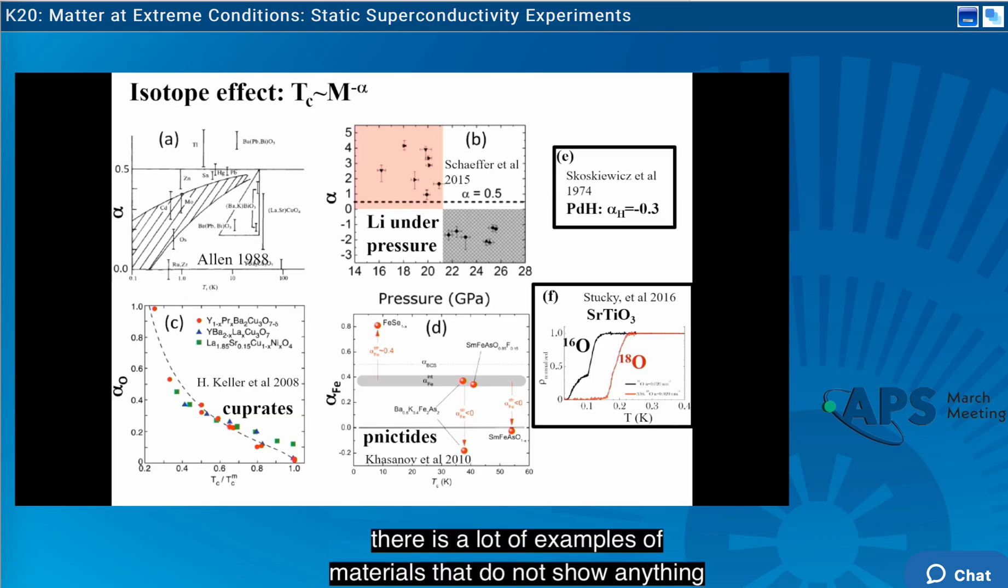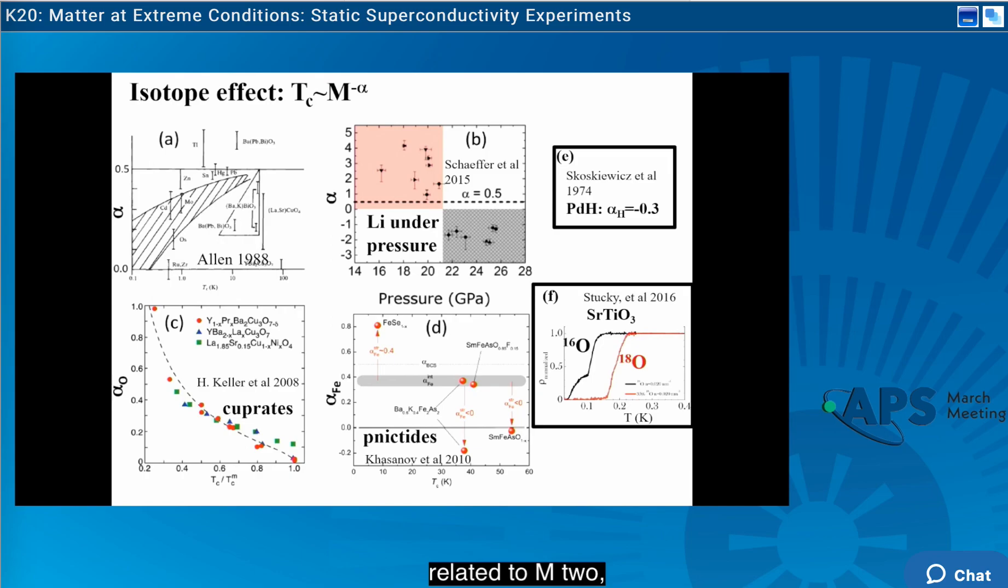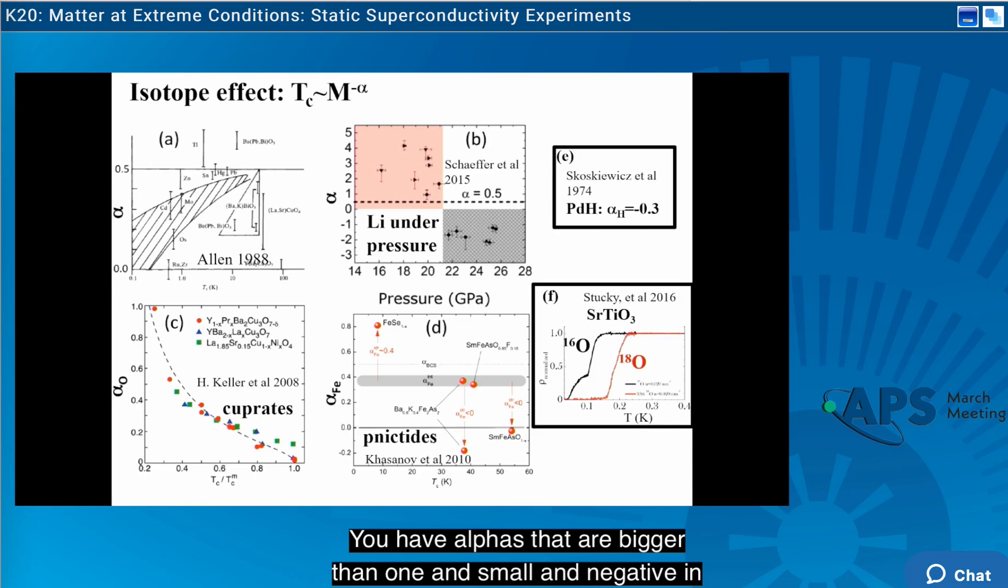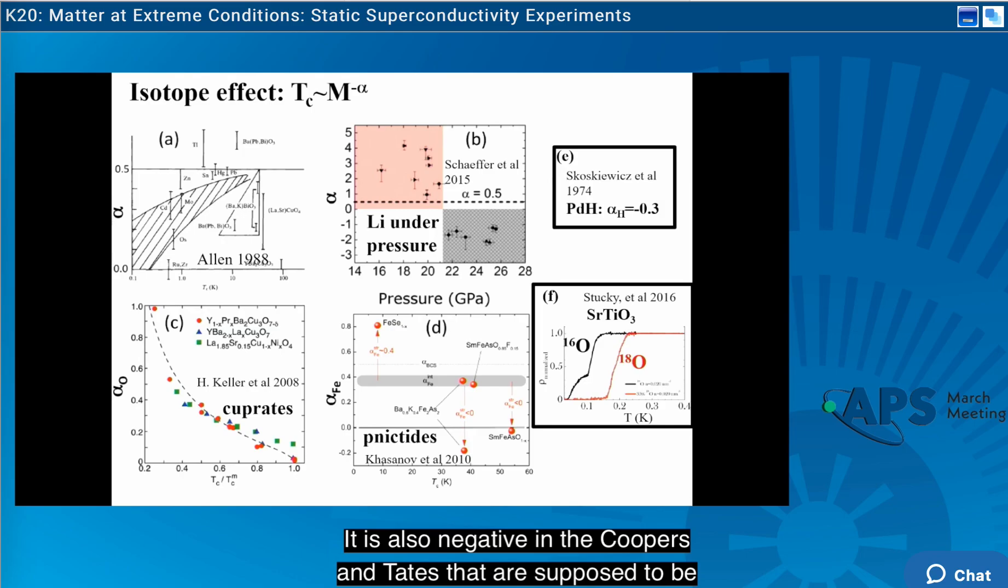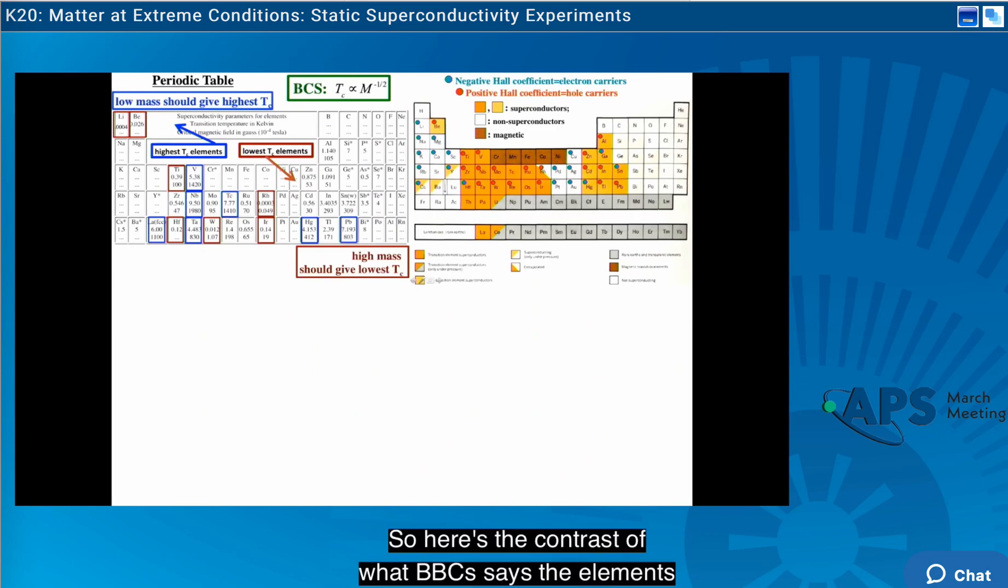If you look at the isotope effect, there is a lot of examples of materials that do not show anything related to m to the minus one half. In the elements, you have zero isotope effect elements. In lithium under pressure, you have alphas that are bigger than one and small and negative. In strontium titanate, it's totally contrary to what's expected. In palladium hydride, it's also negative. In the cuprates and pnictides that are supposed to be unconventional, you also see isotope effects.